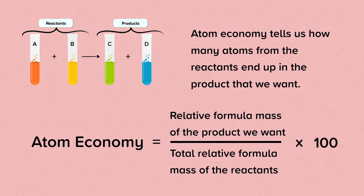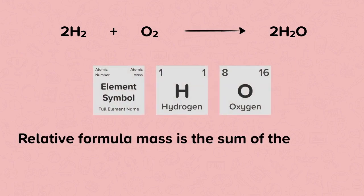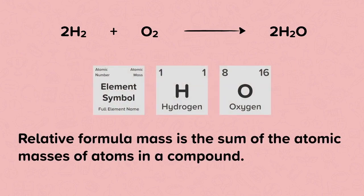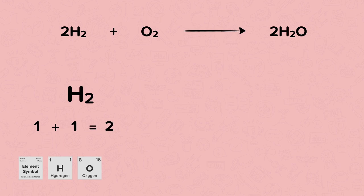Let's quickly recap how to calculate relative formula masses in equations before we move on to atom economy. Relative formula mass is the sum of the atomic masses of atoms in a compound. In a hydrogen molecule there are two hydrogen atoms, each with an atomic mass of 1. So the relative formula mass is 1 plus 1, which is 2. We have two hydrogen molecules, so the mass of the hydrogen before the reaction is 2 times 2, which is 4.